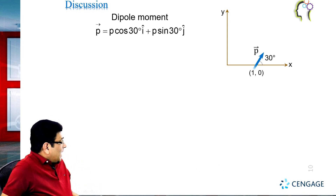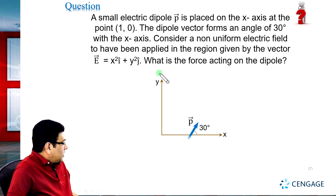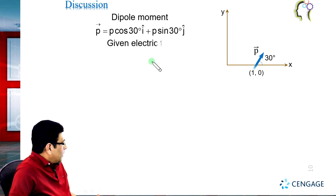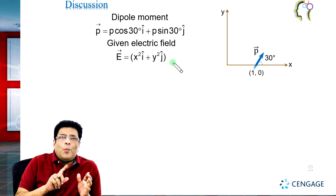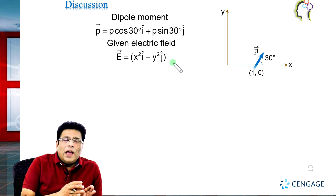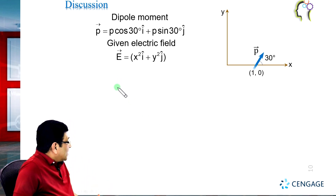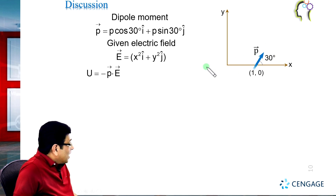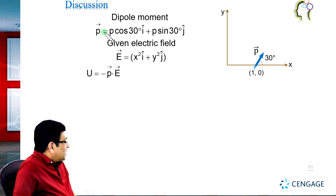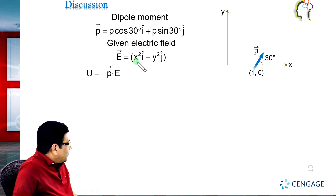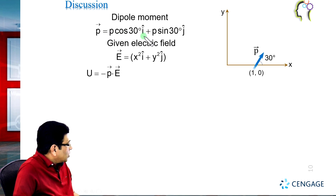We are given the external electric field which is non-uniform. Now we can write the potential energy of the dipole associated with the electric field, which is equal to minus p-dot-E. The dot product of p-vector and E-vector gives: x-squared multiplied by p cos 30 plus y-squared multiplied by p sin 30.